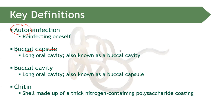Chitin is a small shell made up of thick nitrogen-containing polysaccharide coating, and this is what covers our parasites, making them resistant to the acidic environment in the gastrointestinal tract.